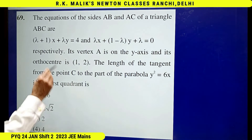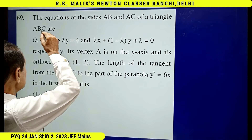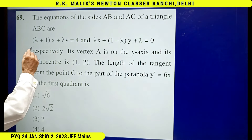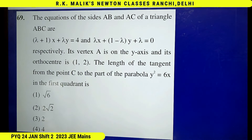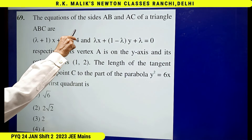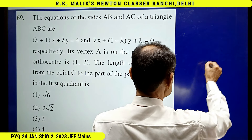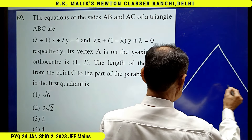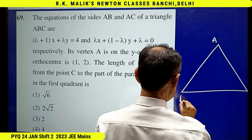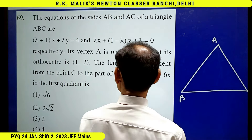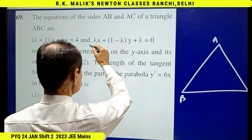In this question, it is given that the equations of the sides AB and AC of a triangle ABC are given respectively. The equation of side AB is one expression and AC has another equation.